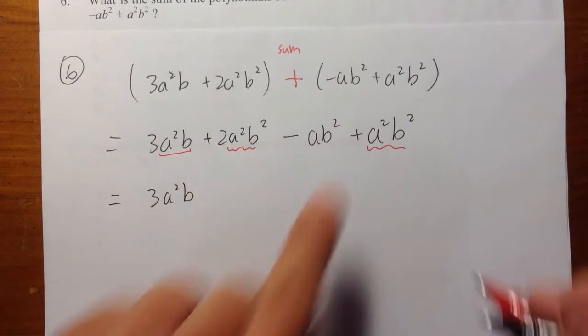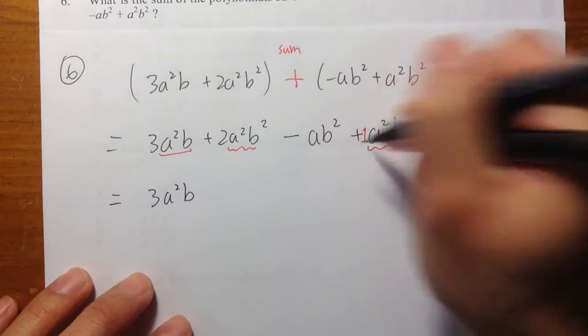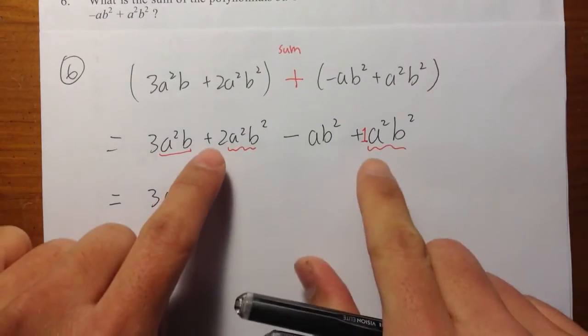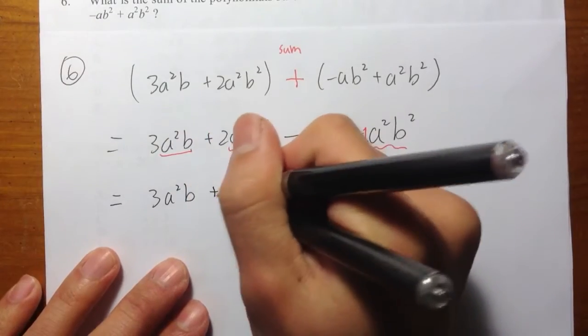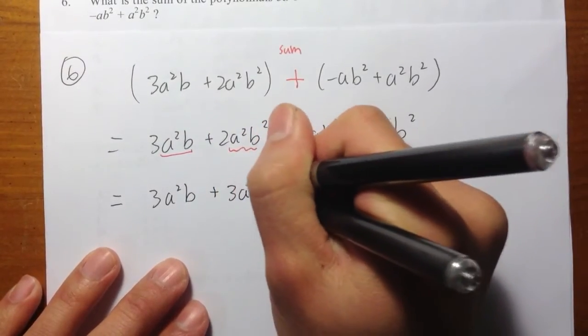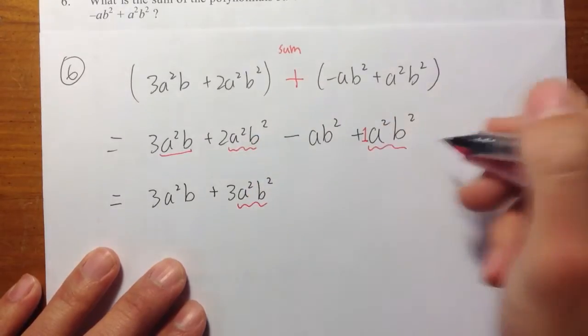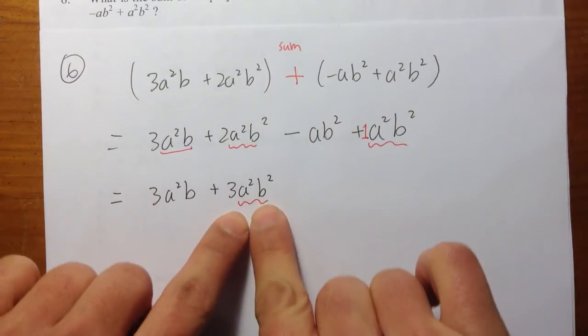We have 2 plus, technically there's a 1 in front of this term. So we can do 2 plus 1, which is positive 3, plus 3a²b². So that's this term. These two terms becomes this term.